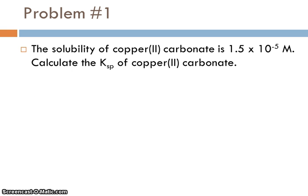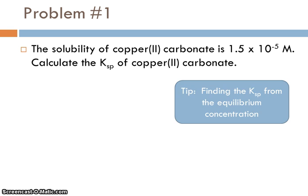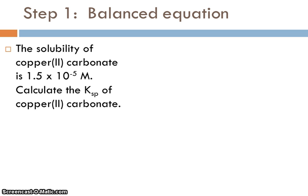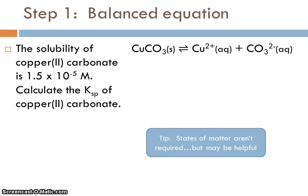Let's look at the first problem. The solubility of copper(II) carbonate is 1.5 × 10⁻⁵ molar — that's the equilibrium concentration. Calculate the KSP of copper(II) carbonate. This falls into the category where we have the equilibrium concentration and need to find the KSP. We start with the balanced equation: CuCO₃ dissolves into Cu²⁺ ions and CO₃²⁻ ions.